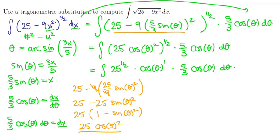So let's clean up some terms here. This is just 5 and 5 times 5 thirds is 25 thirds and we have a cosine times a cosine so we have cosine of theta quantity squared.